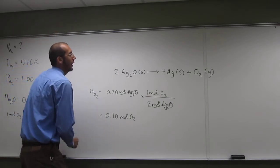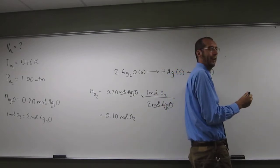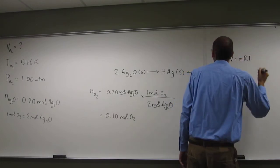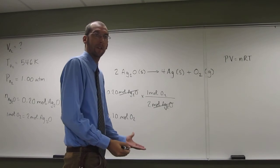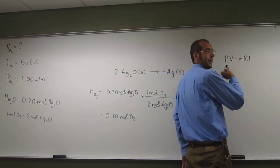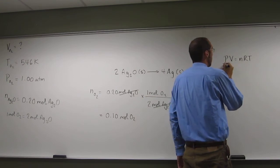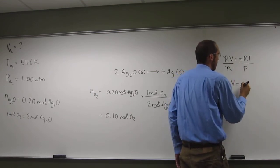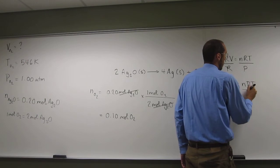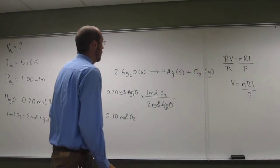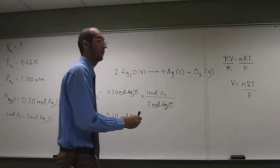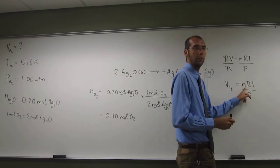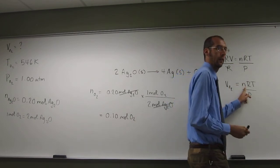Before I erase that, let's write down the ideal gas law. Do you remember the ideal gas law? What is it? PV equals nRT. PV equals nRT, right? And what are we looking for in this one? Volume. To isolate volume, we're going to have to divide by pressure. Pressure cancels there, right? And what's our new equation? V equals nRT over P. So, we're looking for the volume of oxygen.